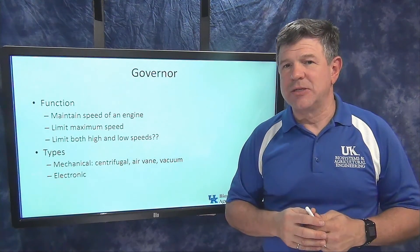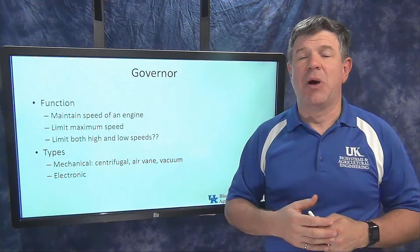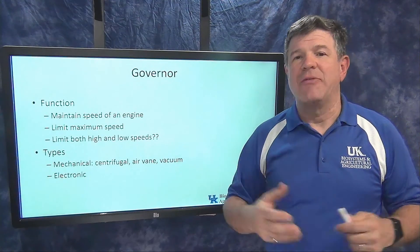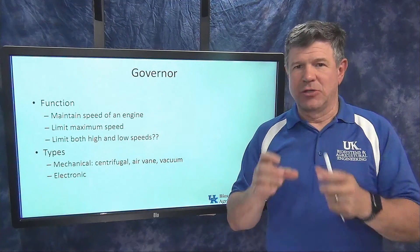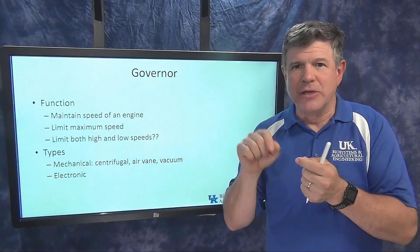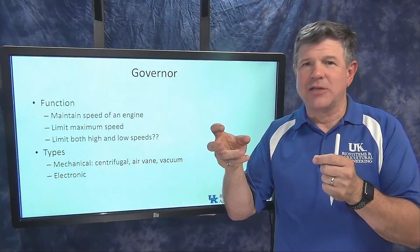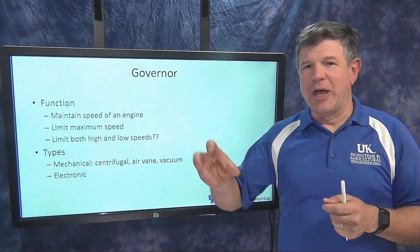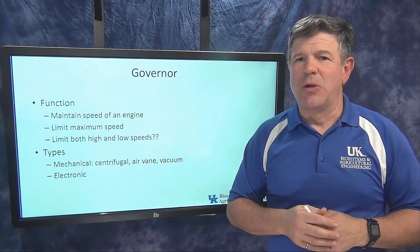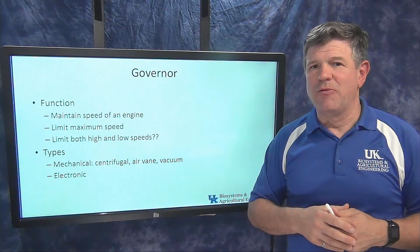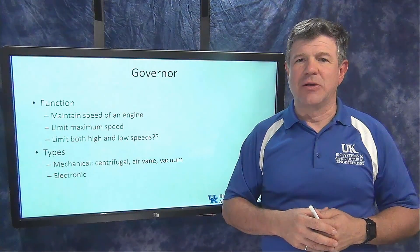On older large engines, they will have mechanical type governors. But many newer engines, even some newer small engines, will have electronic governor systems. These use an electronic sensor to measure speed, feed the signal into a small computer, which decides whether the engine is too fast or too slow, then sends a signal to an electronic actuator that opens and closes the throttle plate or adjusts the injector pump to get more or less fuel into the engine. That's governors — a summary of what we looked at and talked about, and hopefully this helps us understand how they work.